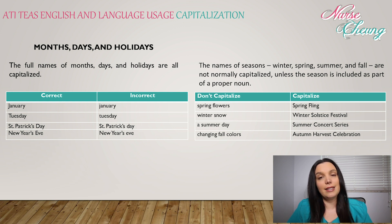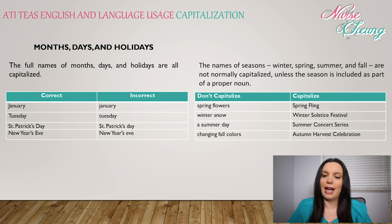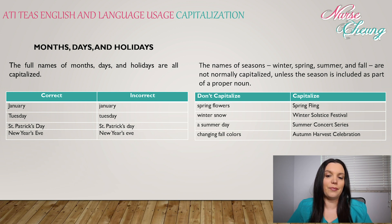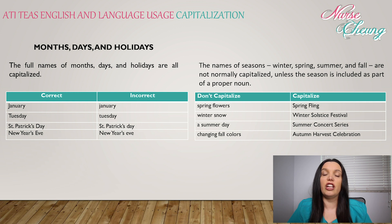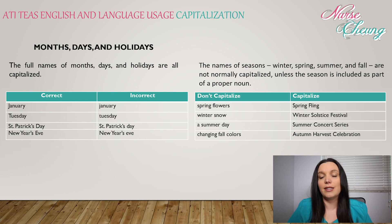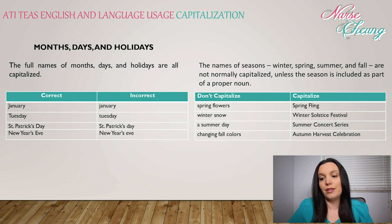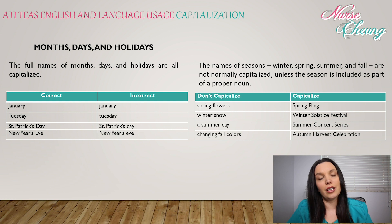The names of seasons — winter, spring, summer, and fall — are not normally capitalized unless a season is included as part of a proper noun. For example, we don't capitalize 'spring flowers', 'winter snow', 'a summer's day', or 'changing fall colors.' However, we would capitalize 'Spring Fling', 'Winter Solstice Festival', 'Summer Concert Series', and 'Autumn Harvest Celebration' because these all refer to specific proper nouns.